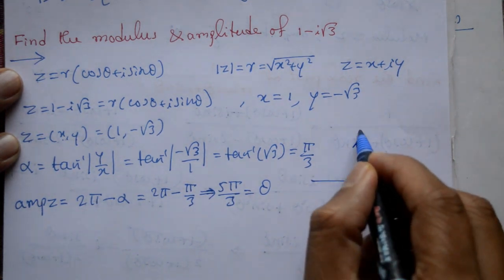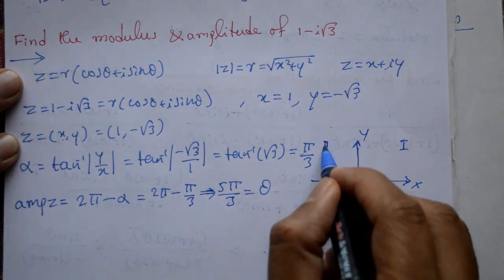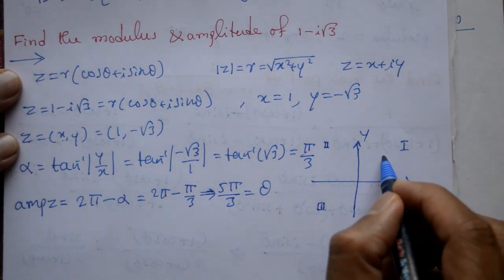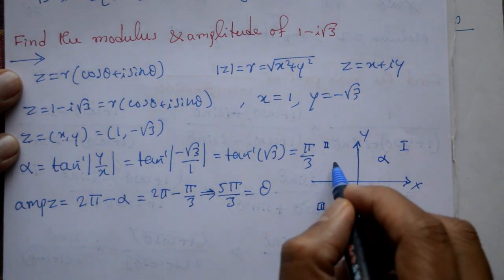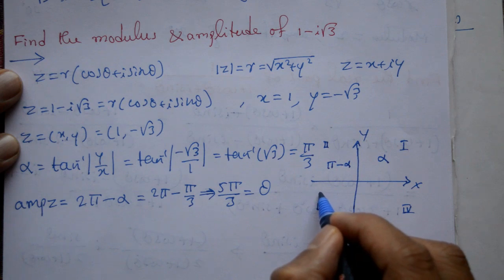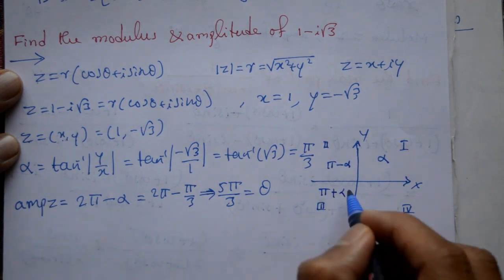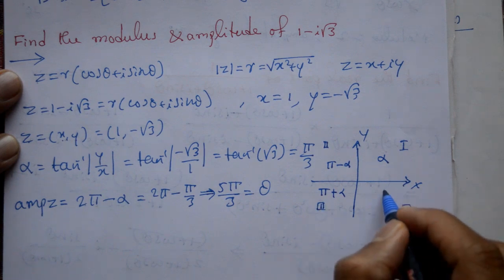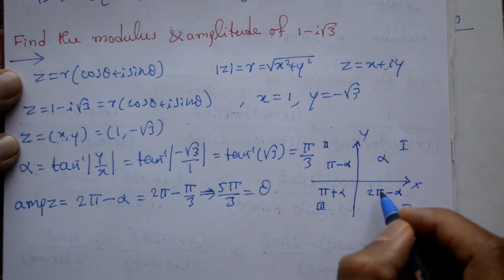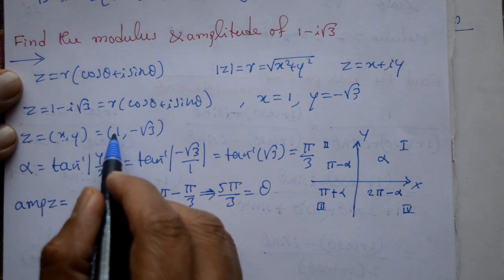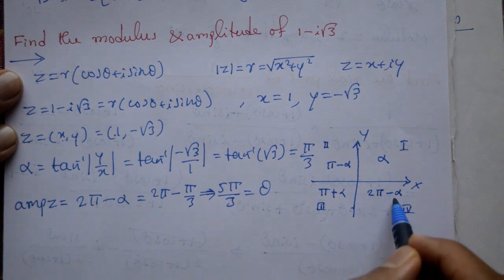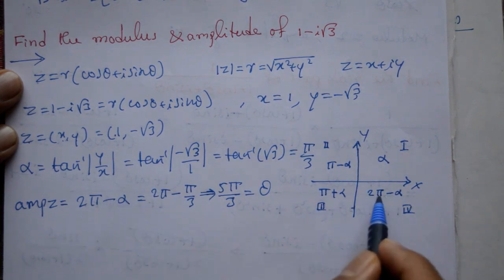See the x and y axis. First quadrant mein amplitude of z is alpha. Second quadrant mein amplitude of z is pi minus alpha — below 180 degree. Third quadrant mein amplitude of z is pi plus alpha — more than 180 degree. Fourth quadrant mein amplitude of z is 2 pi minus alpha — below 360 degree. Yahan x positive hai, y negative hai, means fourth quadrant. Is liye amplitude of z is equal to 2 pi minus alpha lena hai. Baad me alpha substitute karna hai, hamko theta mil jayega.